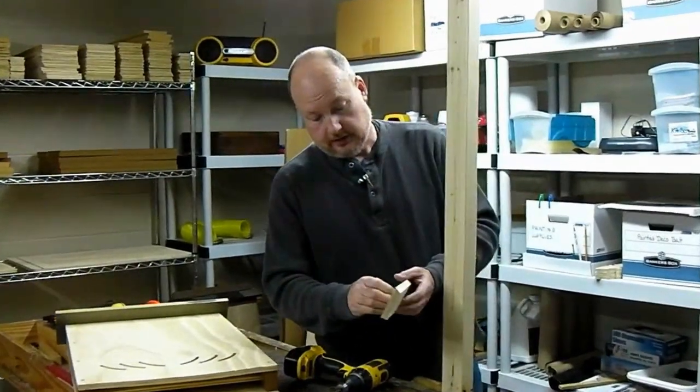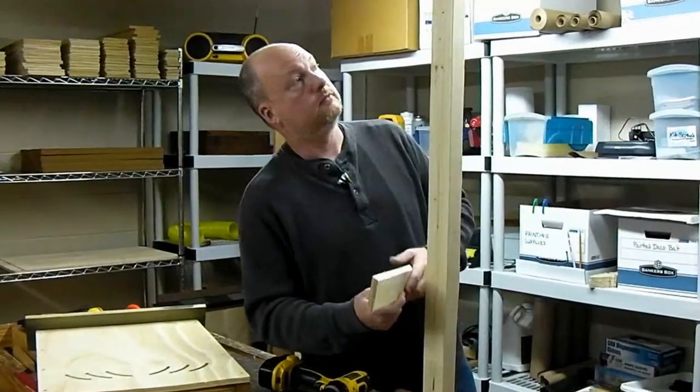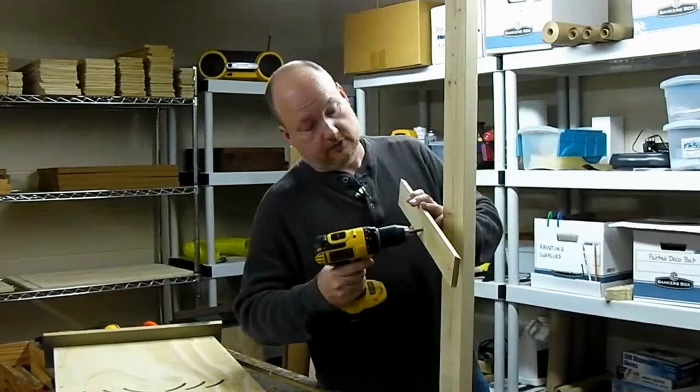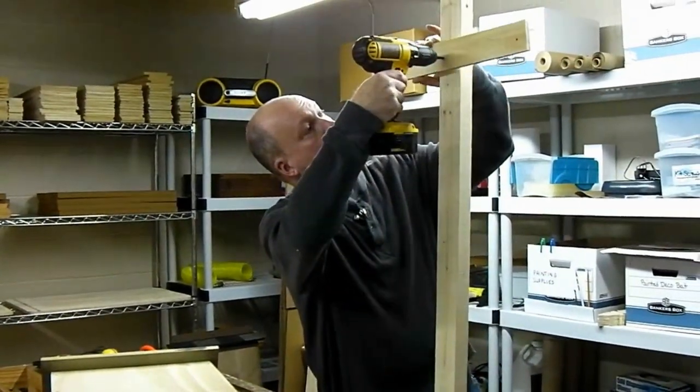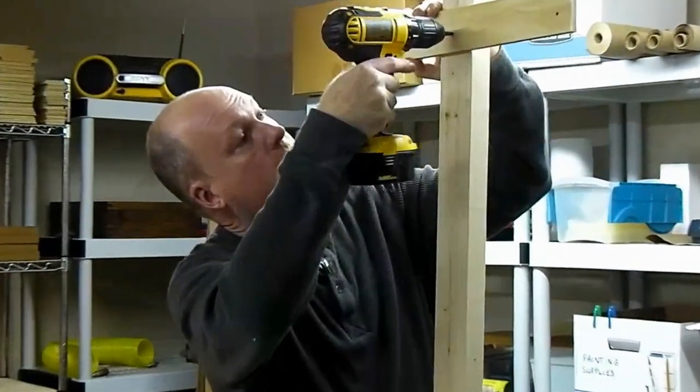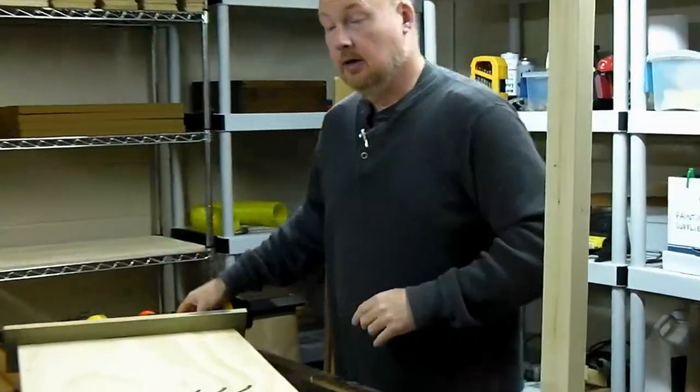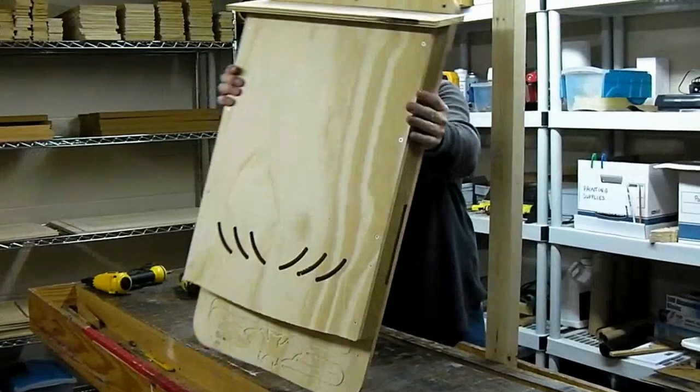You take the cleat, the screw, and the drill up the ladder with you. Take a little level if you don't have a level line already, and you'll fasten it to the pole or the building and you'll get it level. There you go, your bat house is pretty much placed.